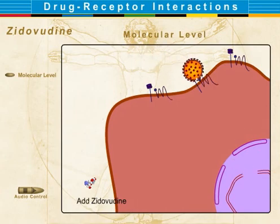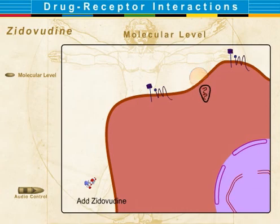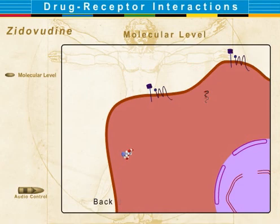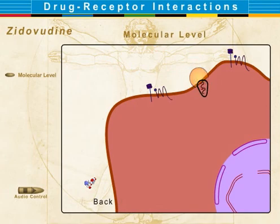When zidovudine is used, it inhibits the viral reverse transcriptase, so the viral genome does not get transcribed and no insertion of viral genome into host cell DNA can occur. This prevents replication of the HIV virus and may leave the infected T cell intact.